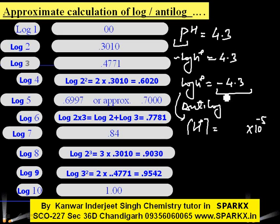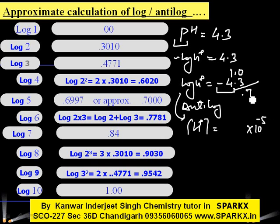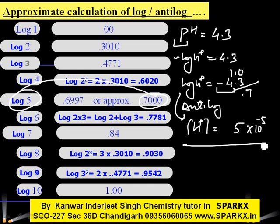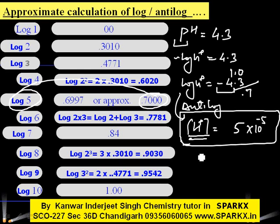For antilog(−4.3): we raise 10 to the power −4 and add 1, giving 10⁻⁵, then subtract 1 from 0.3, giving 0.7 — and antilog of 0.7 corresponds to 5. Therefore, [H⁺] = 5 × 10⁻⁵ molar. This normality value also represents the H⁺ ion concentration of that solution.